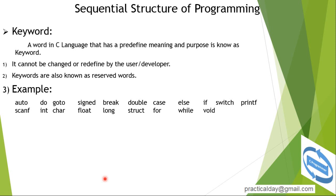These keywords cannot be used by the developer, programmer, or user for their own purpose, and cannot have their names or purposes changed for personal use. A keyword in C language that has predefined meaning and purpose is known as a keyword. Keywords cannot be changed or redefined by the user, developer, or programmer. Keywords are also known as reserved words.